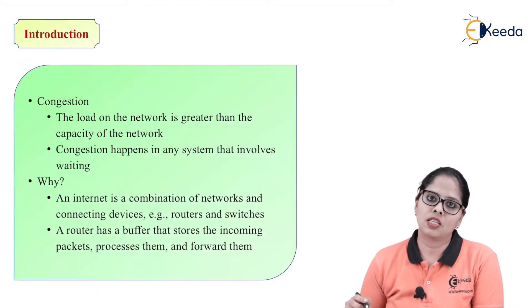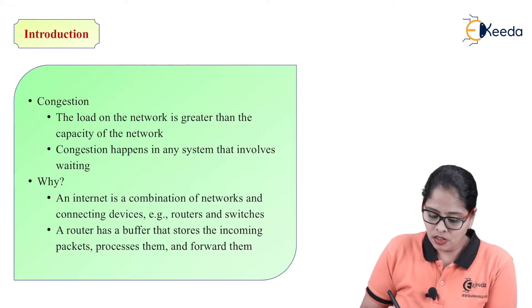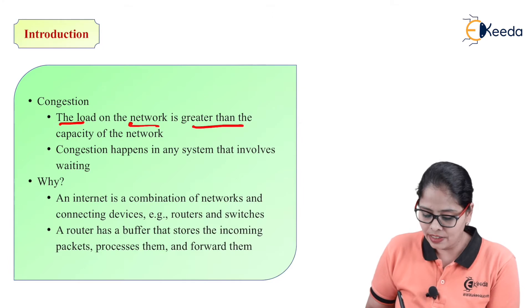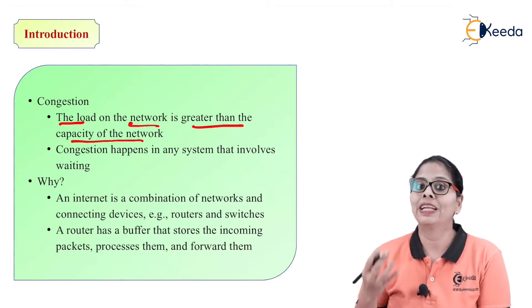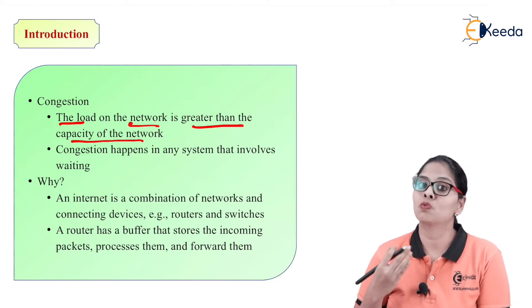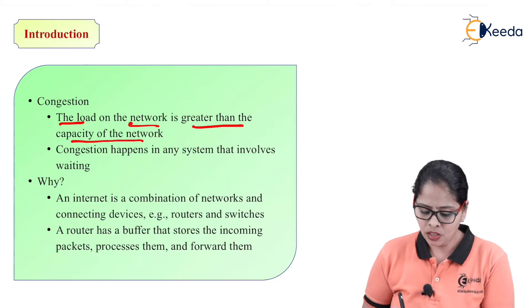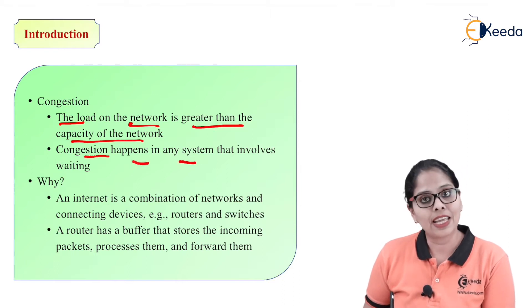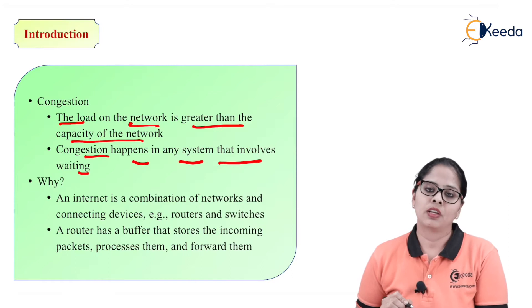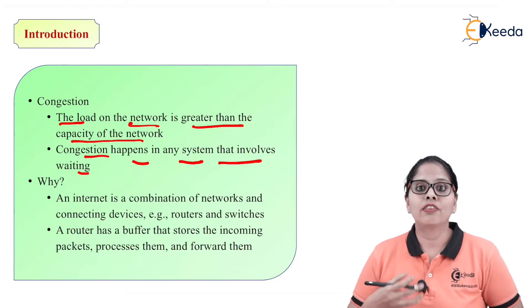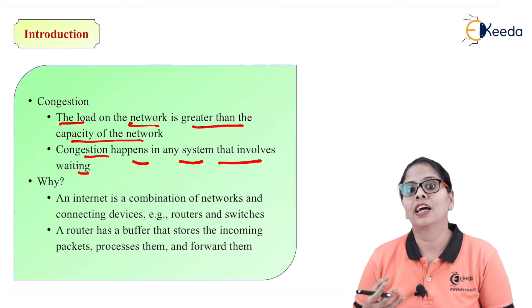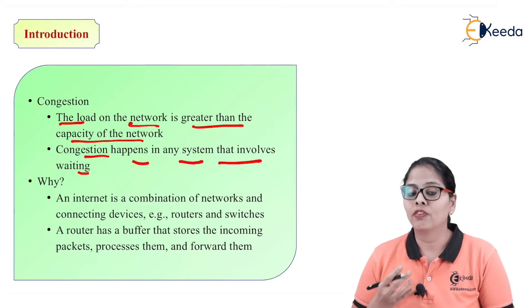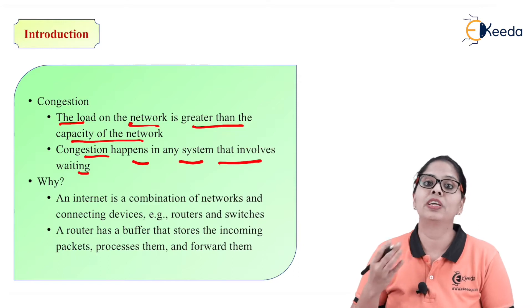Congestion means the load on the network is greater than the capacity of the network. Your load should be less than the network capacity; if it is more, congestion will occur. Congestion happens in any system that involves waiting. Whenever any packet reaches a router, the router takes some time to process that data, so there is waiting time, and that causes congestion.